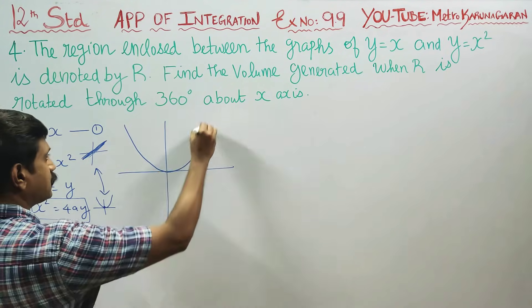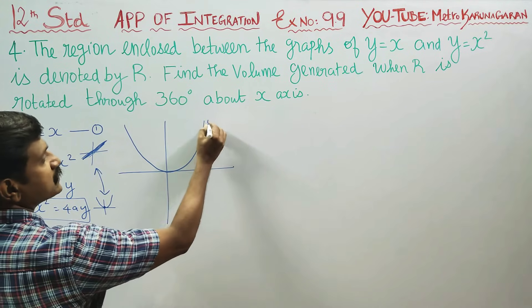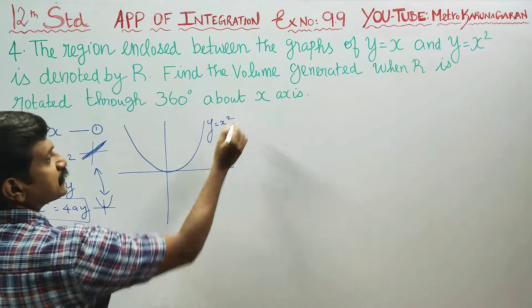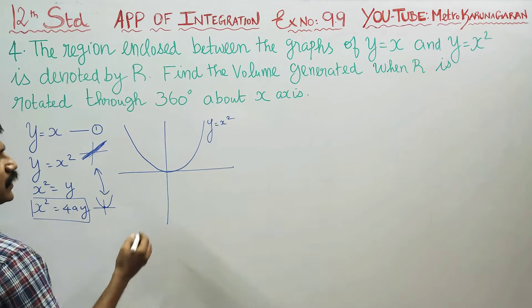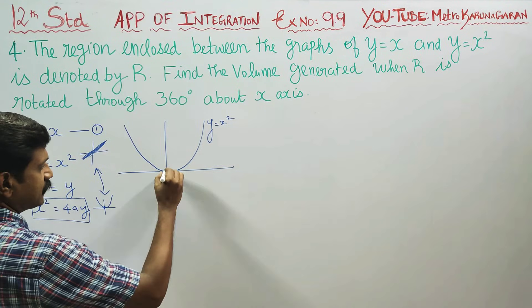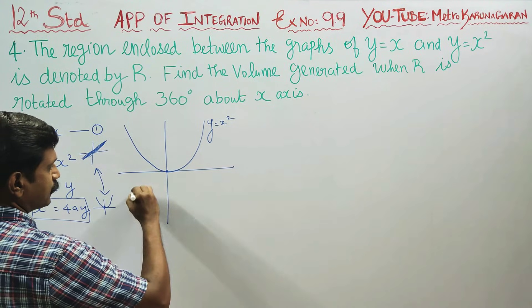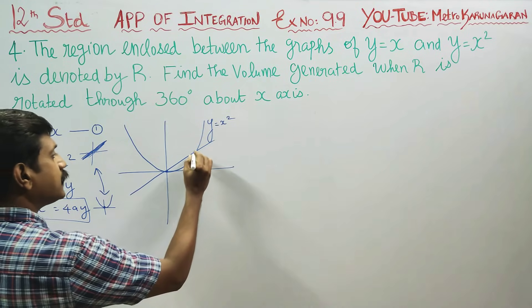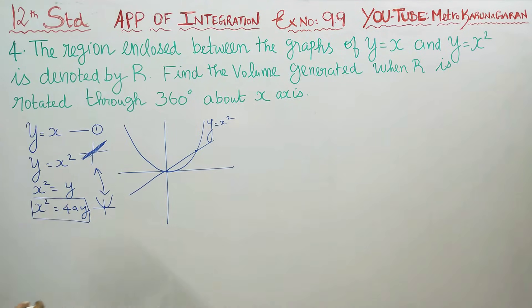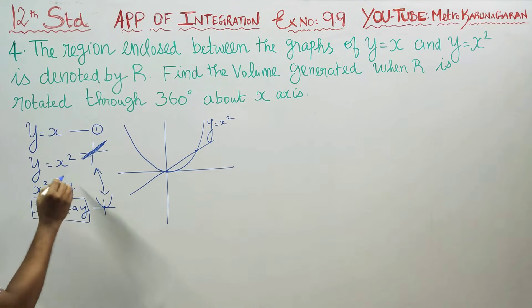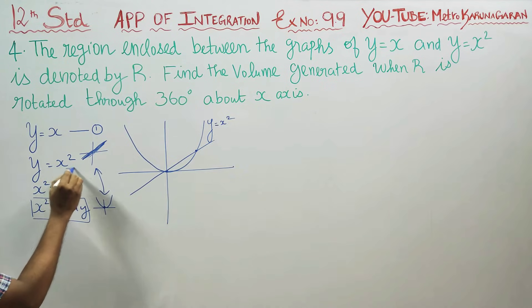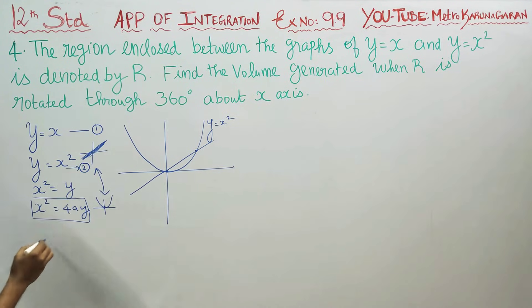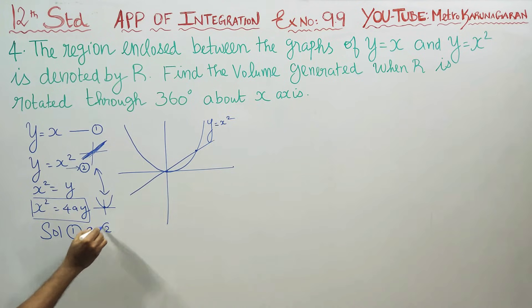My parabola is y = x² and the straight line is y = x. To find where they intersect, we need to solve equations 1 and 2 together. Let us solve curves 1 and 2.